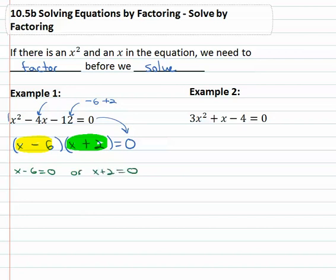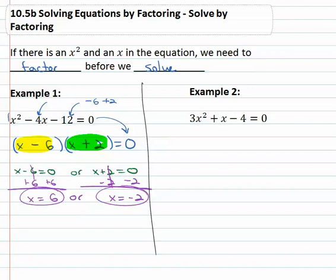And then we simply have to solve these two equations by first adding 6 to both sides, x equals 6. Or subtracting 2 from both sides, x equals negative 2, and we've got the two solutions to this equation. If x is 6 or if x is negative 2, the equation x squared minus 4x minus 12 will equal zero.